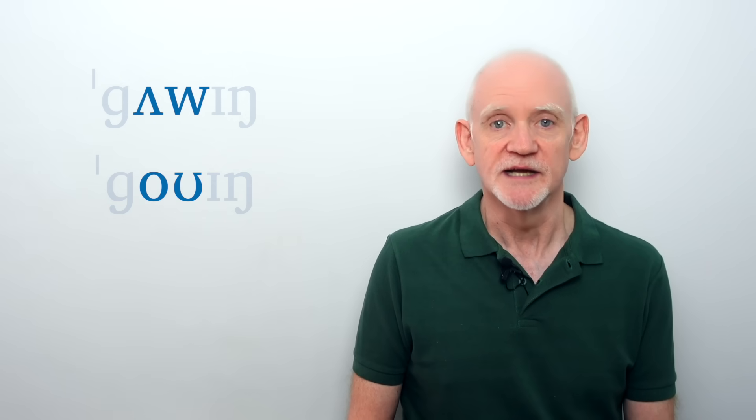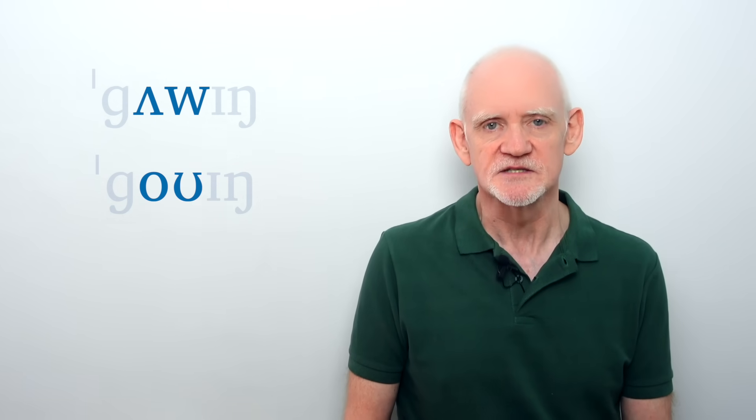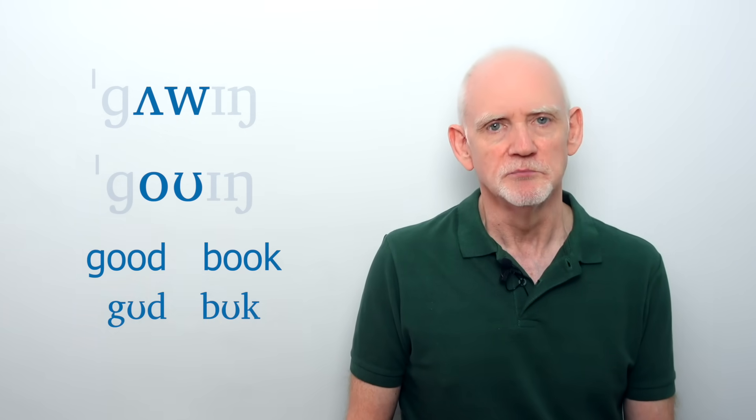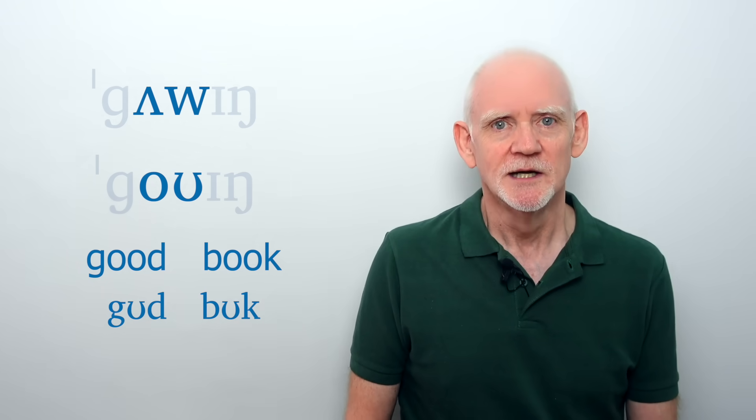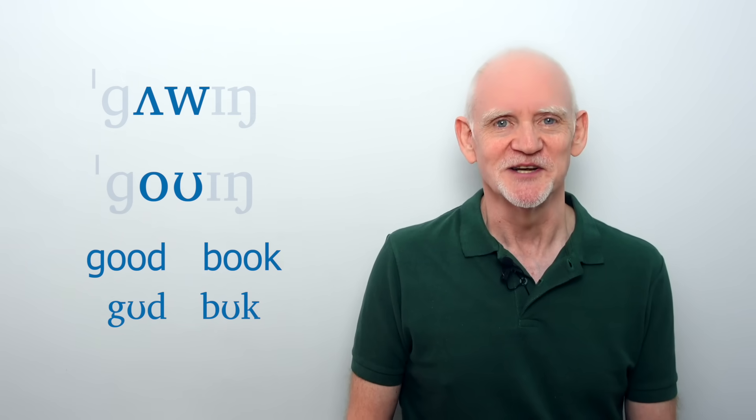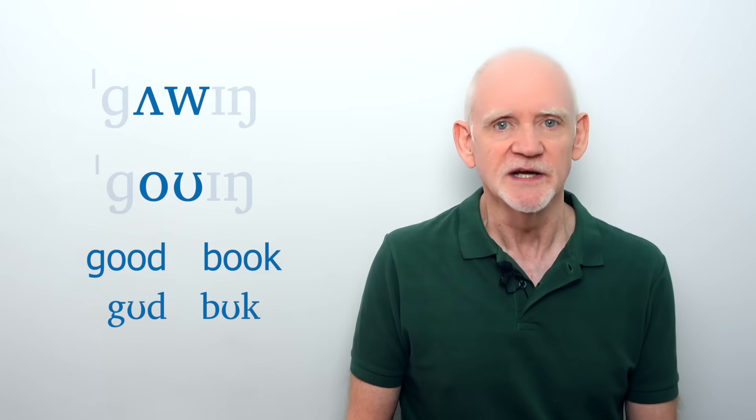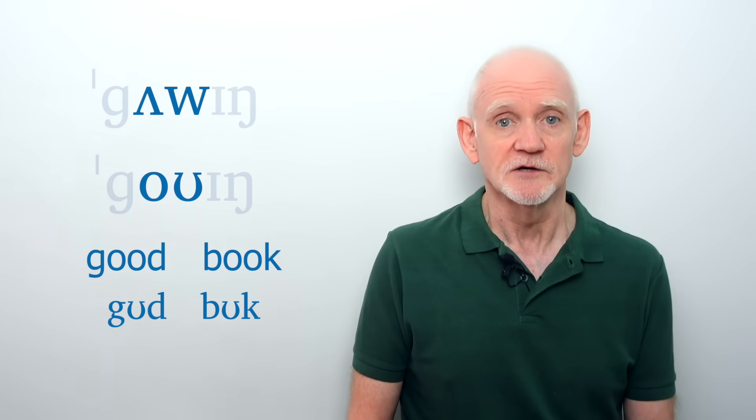And we see her lips starting to round there for the glide portion of the diphthong. Now there's no good reason in Australian or any other accent of English to transcribe this kind of glide with the symbol for the checked vowel, as in Australian good and book. Unfortunately, most dictionaries do this.